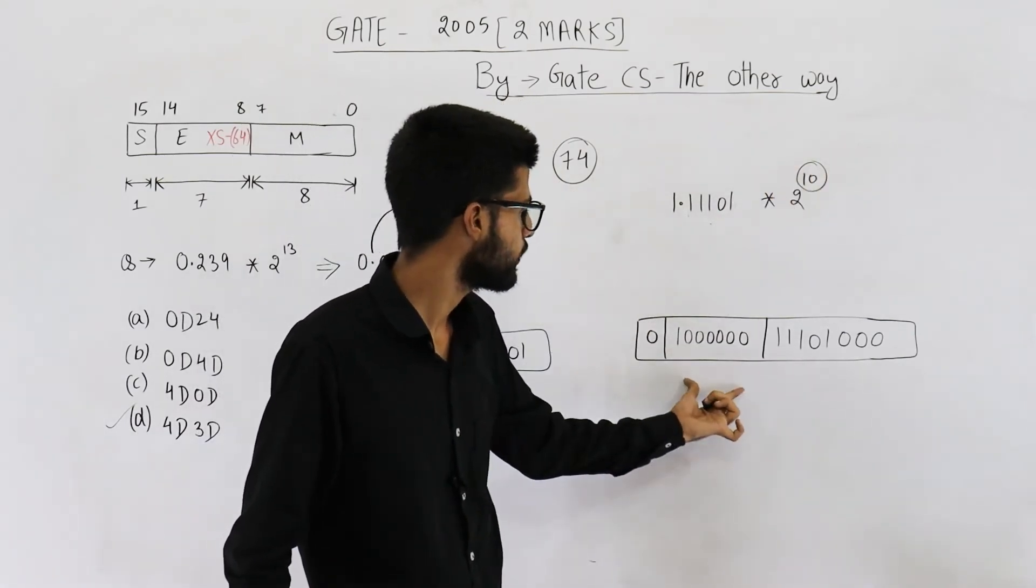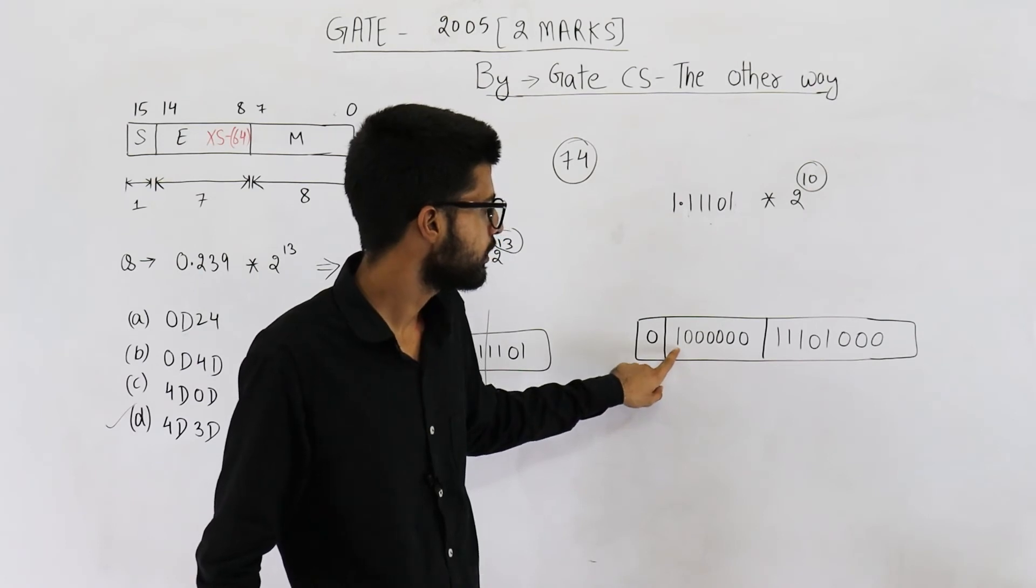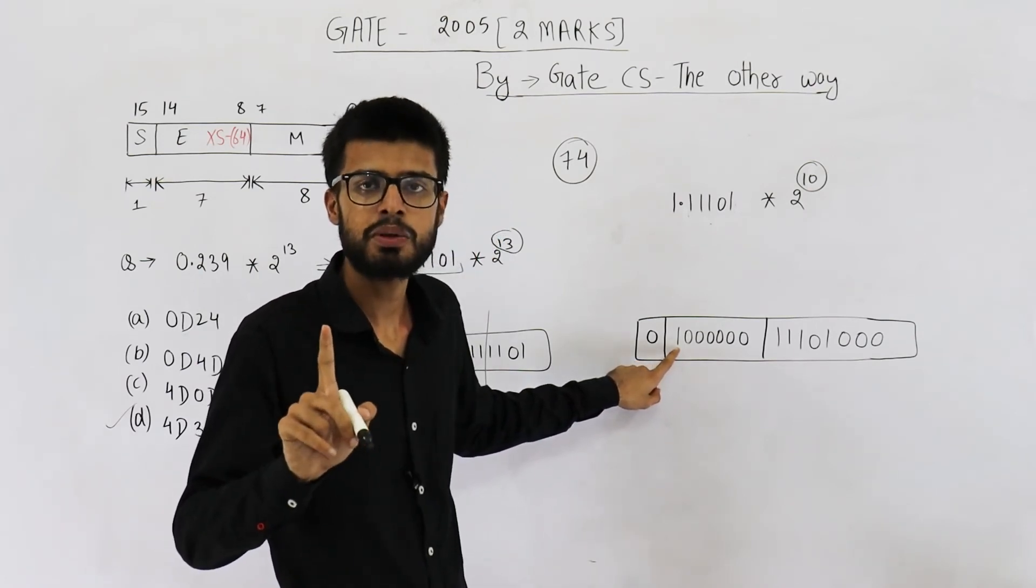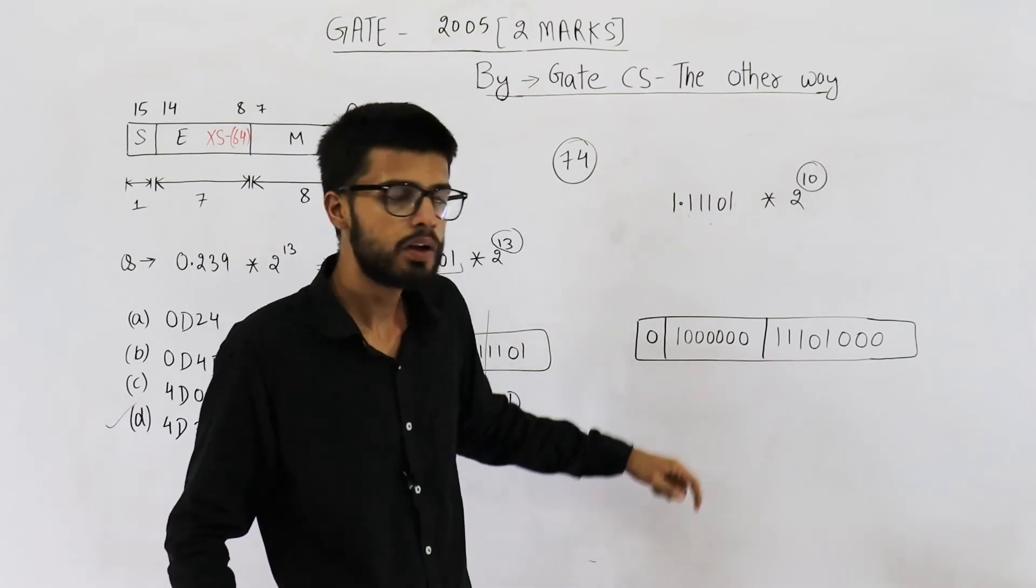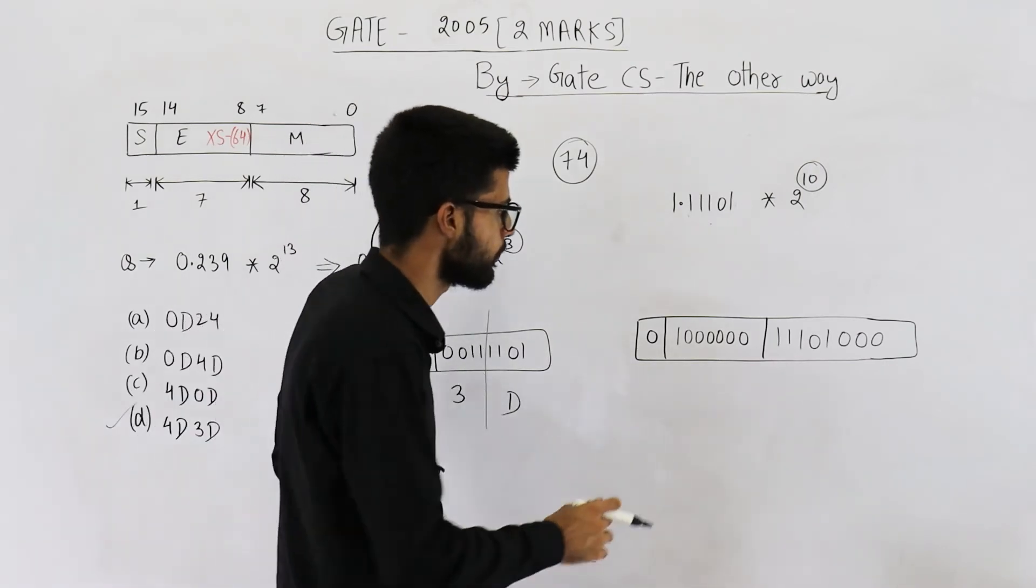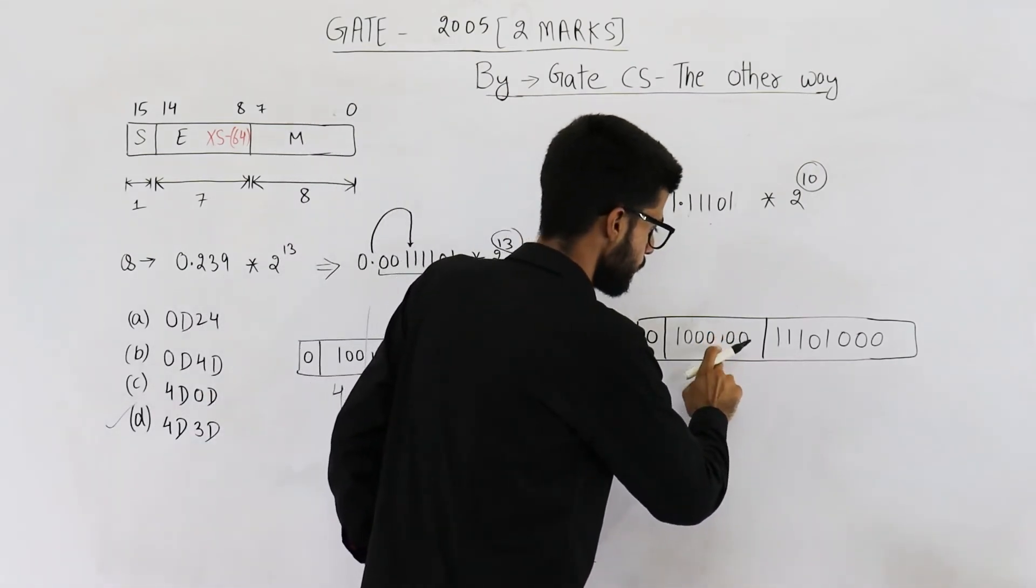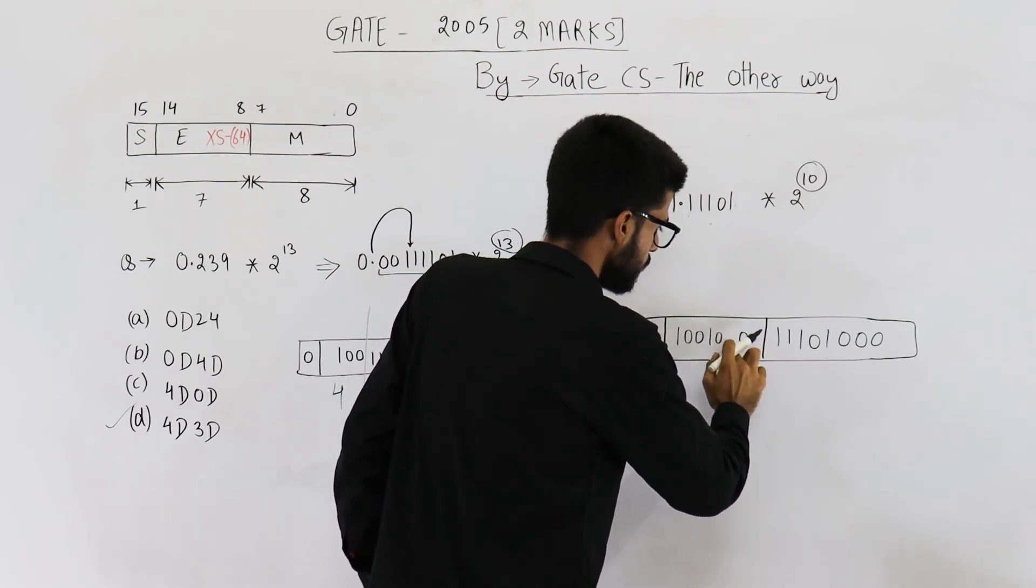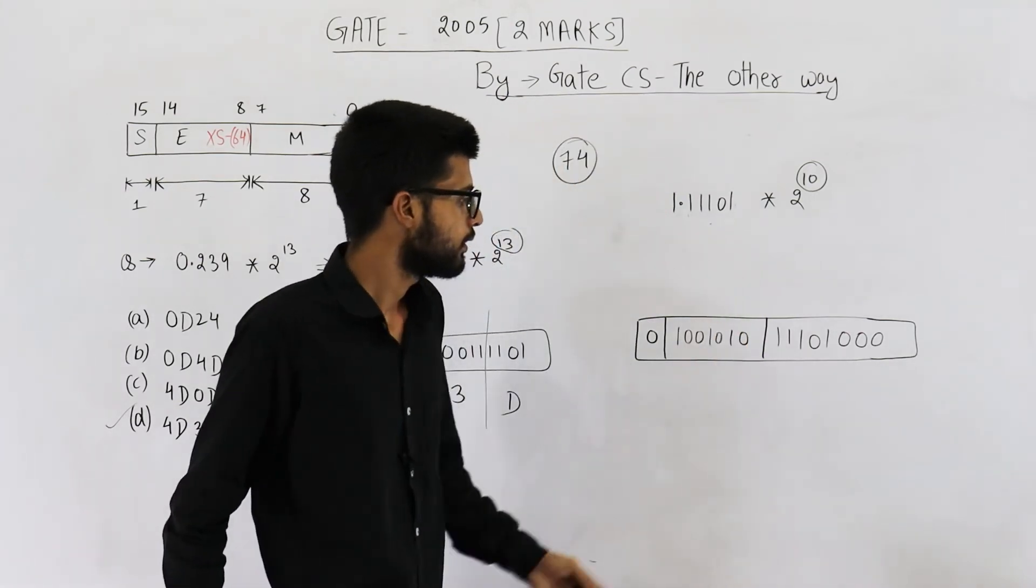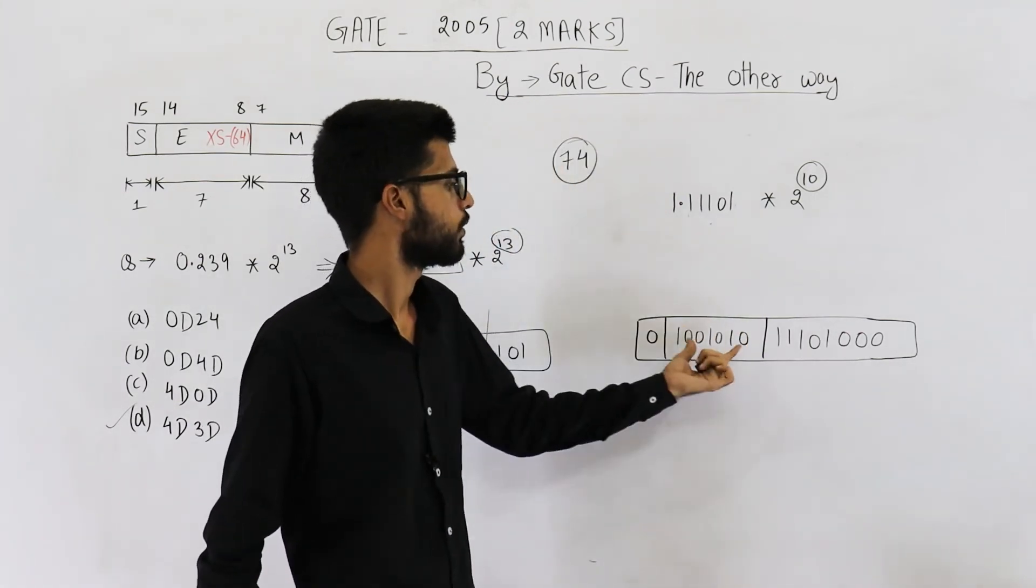Now to save 74 here, I am just turning on this first bit. If this bit is on, that means the value is 64. This number is 64. Now we need to save 10 more. So 10 is 1010. This will become 1010. This number is 74.